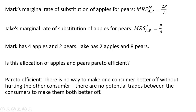Pareto efficient means there is no way to make one consumer better off without hurting the other consumer. In other words, there are no potential trades between the consumers to make them both better off. So we want to see if this allocation of apples and pears between Mark and Jake is Pareto efficient.